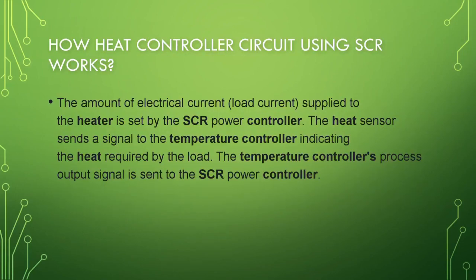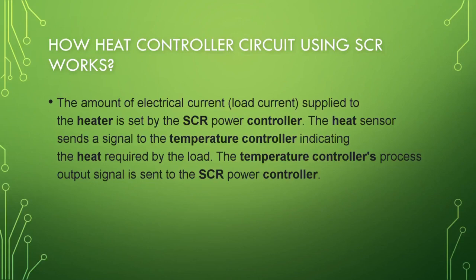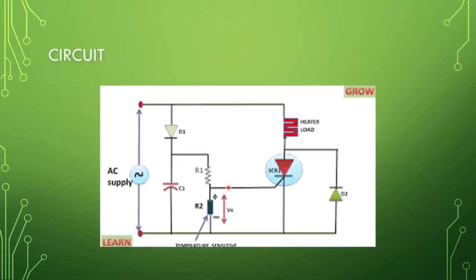Now, how does a heat controller circuit using SCR actually work? The amount of electrical load current supplied to the heater is set by the silicon controlled rectifier power controller. The heat sensor sends a signal to the temperature controller indicating the heat required by the load. The temperature controller's output signal is then sent to the silicon controlled rectifier controller.